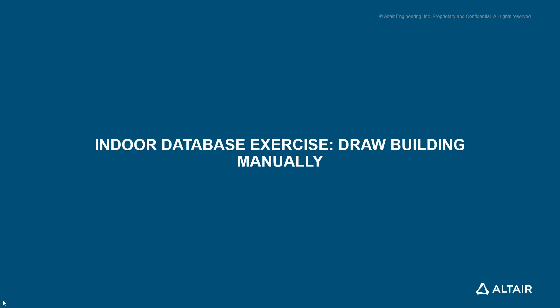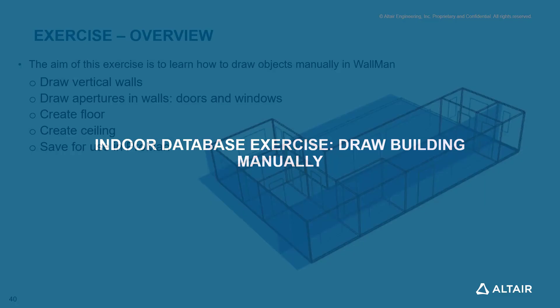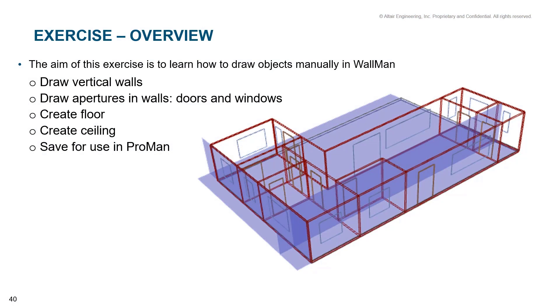Now, let's do the first example, which is an indoor database exercise to draw a building manually. The aim of this exercise is to learn how to draw objects manually in WallMan. We will draw vertical walls, draw apertures in walls that would represent doors and windows of different materials. We will create a floor, ceiling, and then save this project to be used in ProMan.